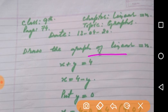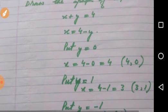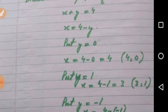So I have taken here a question x plus y is equal to 4 and the question is draw the graph of this linear equation. First of all we will find at least three values of x and y.